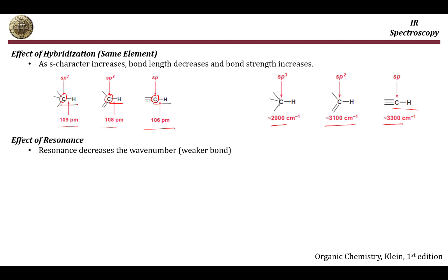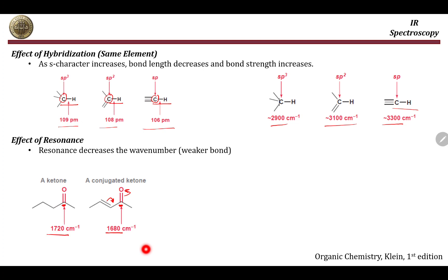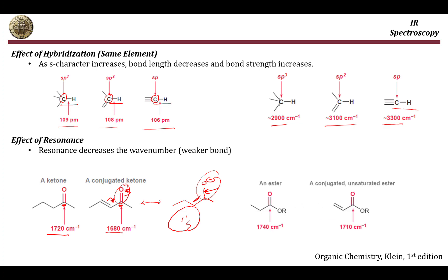The fourth factor is resonance, which generally decreases the wave number by weakening the bond. For example, a carbonyl without resonance absorbs at 1720 cm⁻¹, but when resonance is present the wave number drops to 1680 cm⁻¹ because the bond order is effectively reduced to about 1.5, requiring less energy to stretch. Similarly, a conjugated ester absorbs at 1710 cm⁻¹ compared to 1740 cm⁻¹ for a non-conjugated ester carbonyl.